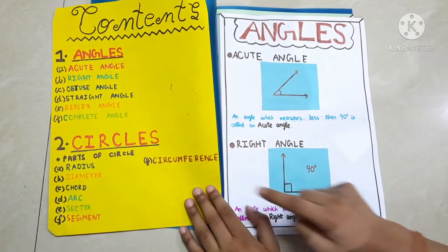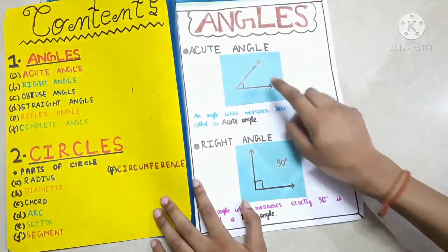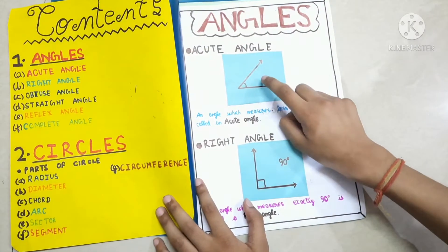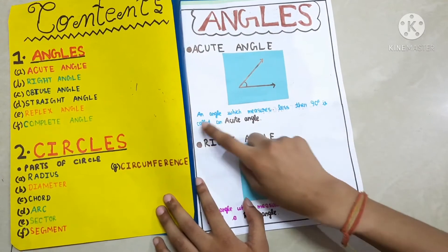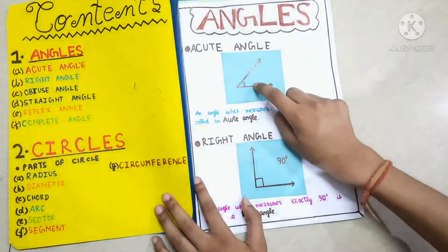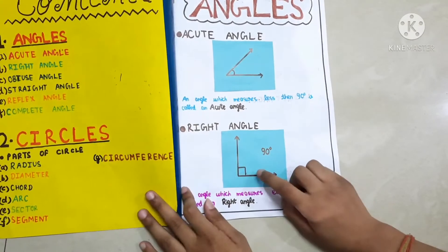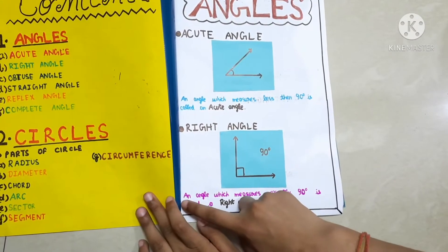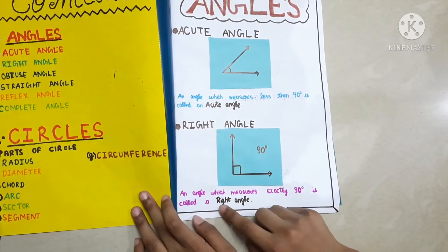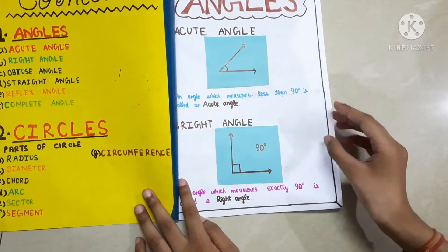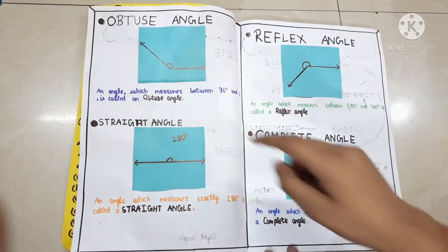Angles. Acute angle: an angle which measures less than 90 degrees is called an acute angle. Right angle: an angle which measures exactly 90 degrees is called a right angle.